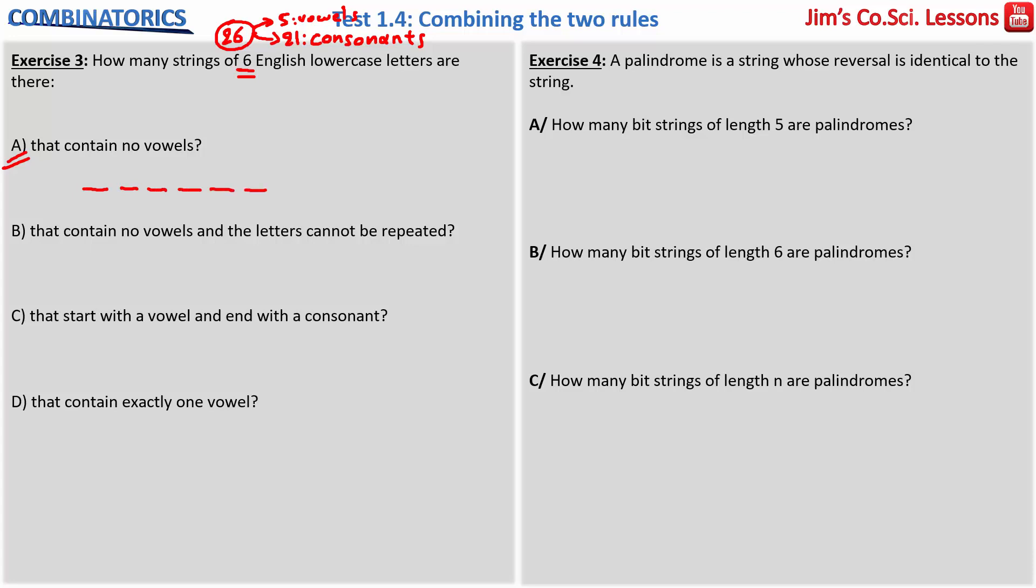So I have six spots and now I don't want to have any vowels, and this means that I will have only consonants. So it is 21 times 21 times 21, etc. The solution is by the rule of product: 21 to the power of 6.